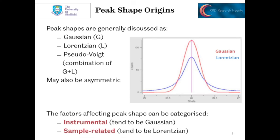The factors that affect peak shape tend to be characterized in two ways: instrumental, which is more likely to be Gaussian effects, and sample-related, which are more often Lorentzian-type effects.